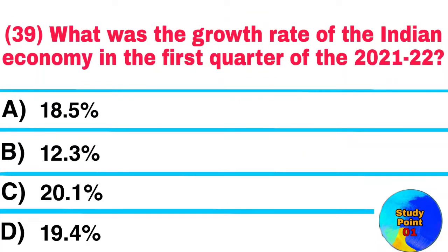Question No. 39. What was the growth rate of the Indian economy in the first quarter of 2021-22? Answer: 20.1%.